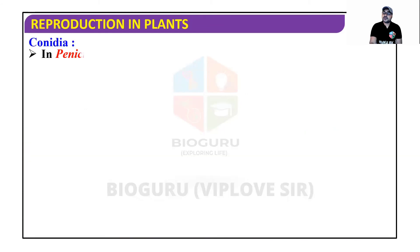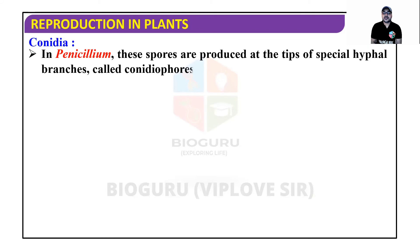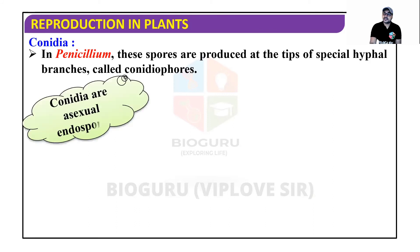Next are conidia. In Penicillium, these spores are produced at the tip of special hyphal branches. Hyphae are thread-like structures that form mycelium, and the spore-bearing structures are called conidiophores. In Penicillium notatum, the spore formation occurs as conidia at the tips of hyphae.